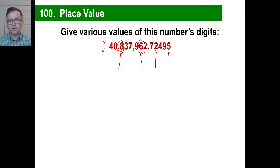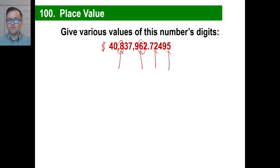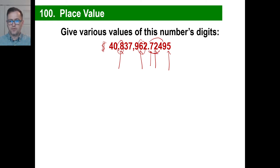On the right side of the decimal, you have 10ths, 100ths, 1,000ths, 10,000ths, 100,000ths, and so on. Anytime you get confused or kind of lost, just cover up all the numbers to the right of the decimal except the number you want to focus on. So 0.7 means 7 tenths; 72 hundredths; 724 thousandths; 7,249 ten-thousandths; and 72,495 hundred-thousandths. You're probably familiar with all that stuff pretty well.